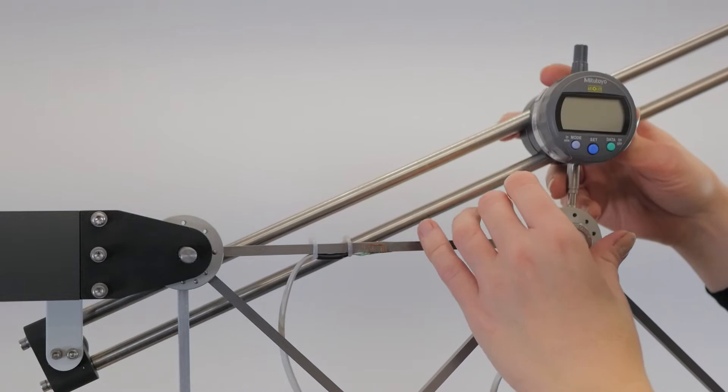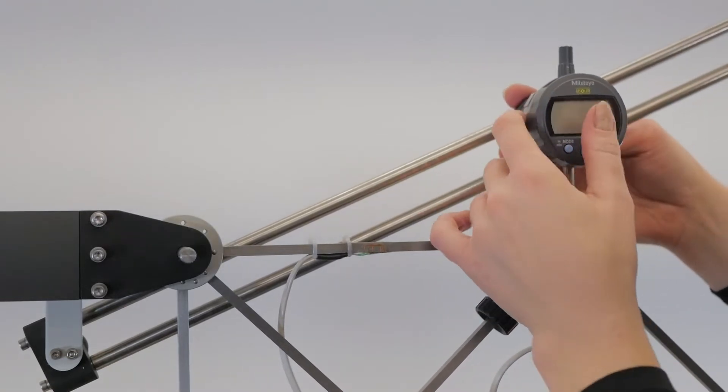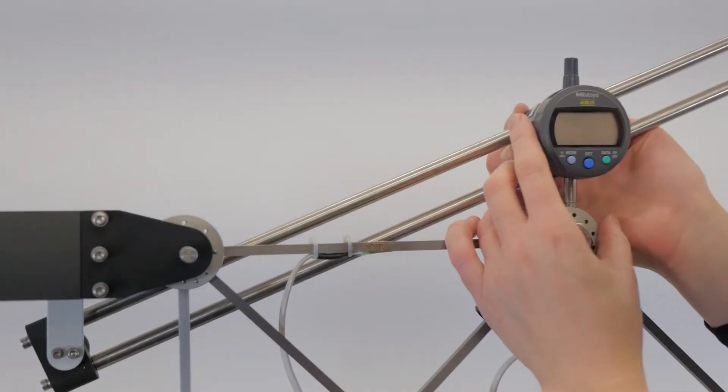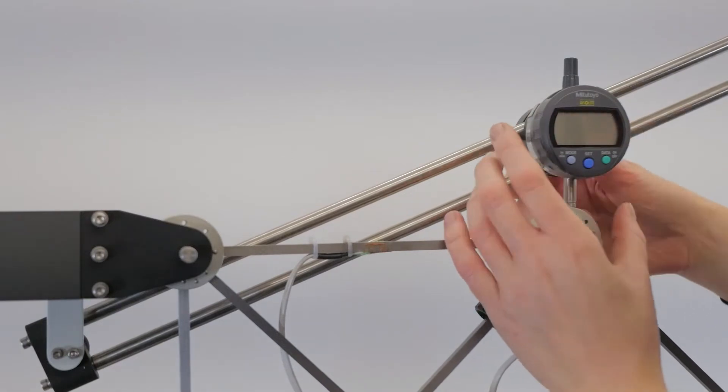To measure the deflection of the framework, up at the top we have a dial indicator which is held by a trammel assembly fixed to the back of the top support.